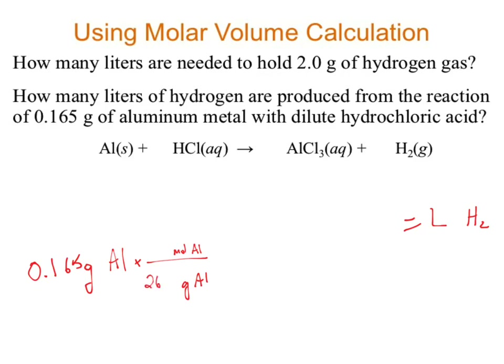Now I don't want moles of aluminum — I want liters of hydrogen. I don't have that conversion, so I want to convert the substance: moles of aluminum to moles of hydrogen. Why? Because the moles-to-liter conversion only works for a gas, and aluminum is not a gas. Where do I find the information to convert the substance? From the chemical equation.